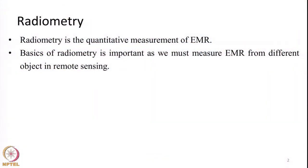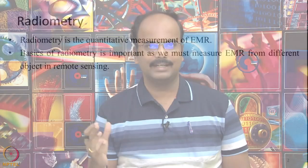Hello everyone, welcome to today's lecture on the topic of radiometry. Radiometry is defined as the quantitative measurement of electromagnetic radiation. In remote sensing, we will be interested in measuring the amount of energy coming in towards an object or going out from an object — essentially measuring from satellites what is the amount of energy that is being reflected or emitted by any object.